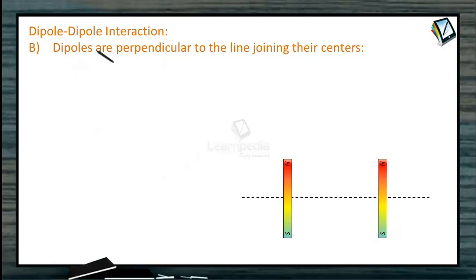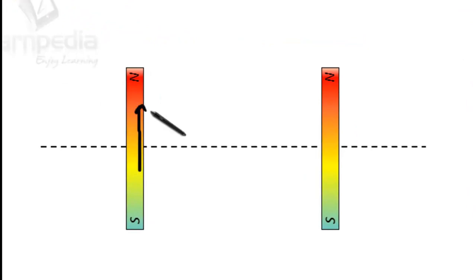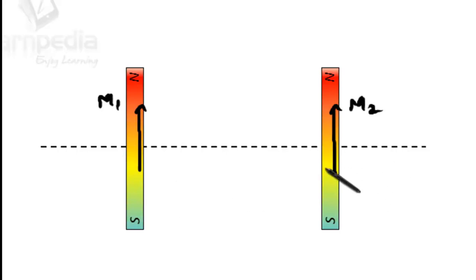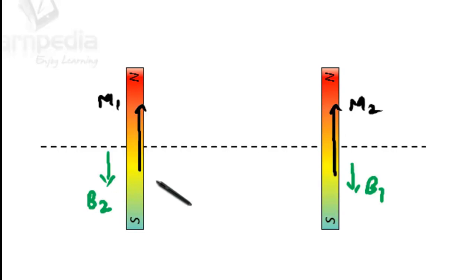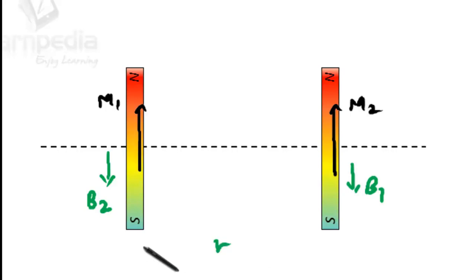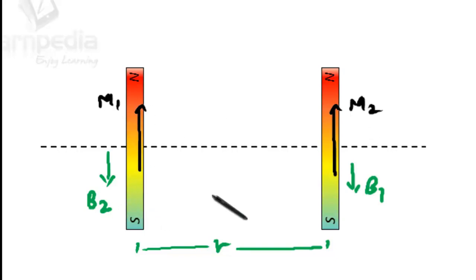Second, Dipole-Dipole Interaction Part B: dipoles are perpendicular to the line joining their centers. The magnetic moment of the first dipole is M1 and the second is M2. The magnetic field of M1 will be directed downwards at the site of M2. This is B1. So the magnetic field at this point will be directed downward. If the similar poles of the two dipoles face each other, the field due to M1 at the midpoint of M2 is B1 = mu naught by 4 pi times M1 by R cubed. The couple will be net equal to 0.